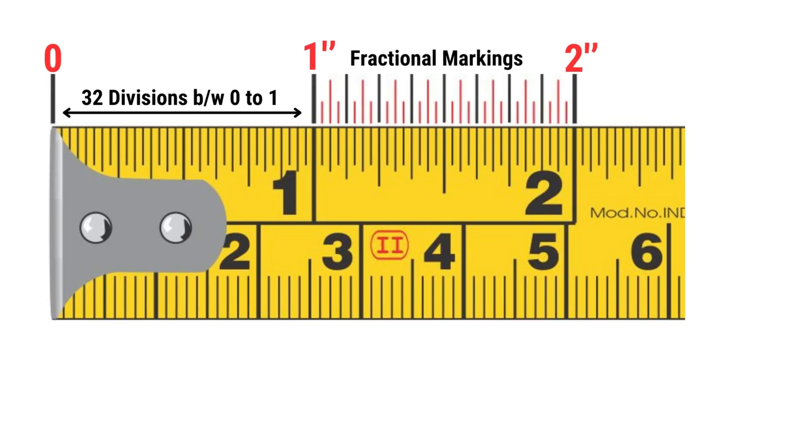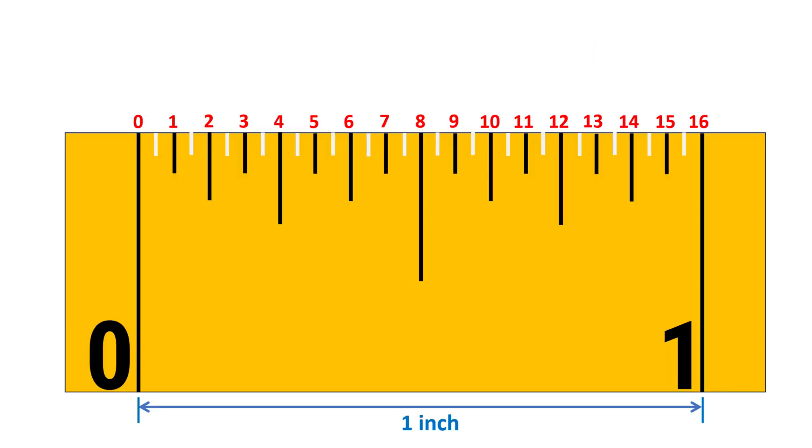Starting from the 0 mark, there are 32 divisions in a Freeman's scale, but we only consider the 16 divisions. As in construction, we rarely require such fine precisions. Each of these 16 smaller marks represents 1/16th of an inch, progressing up to 1 inch.